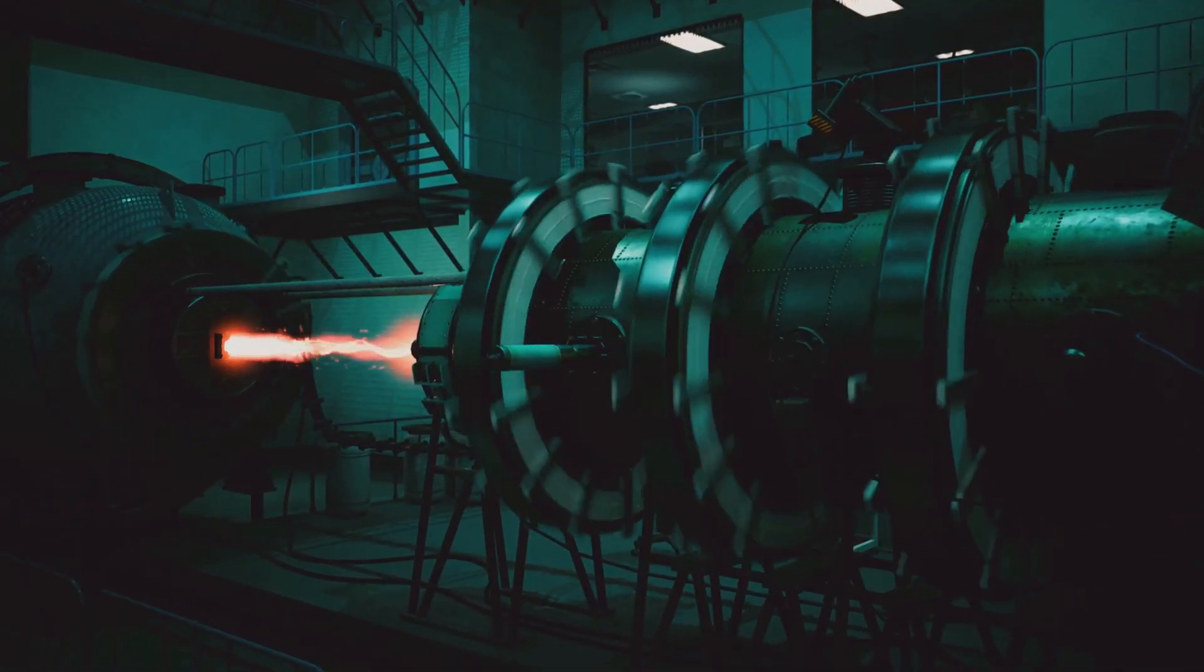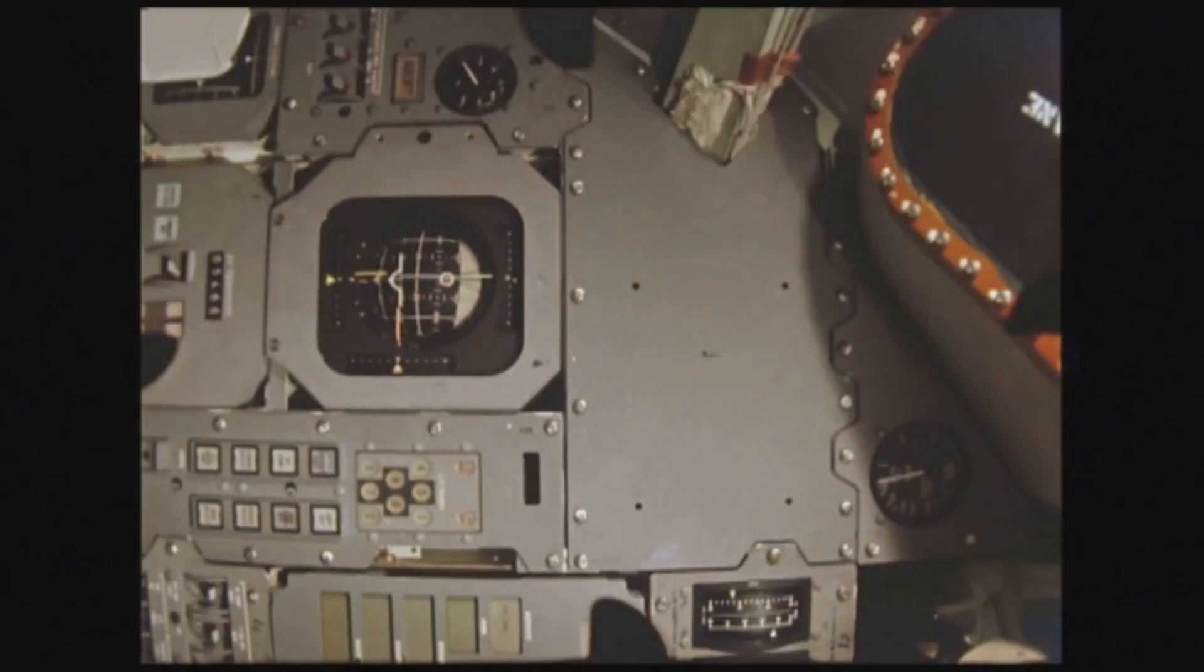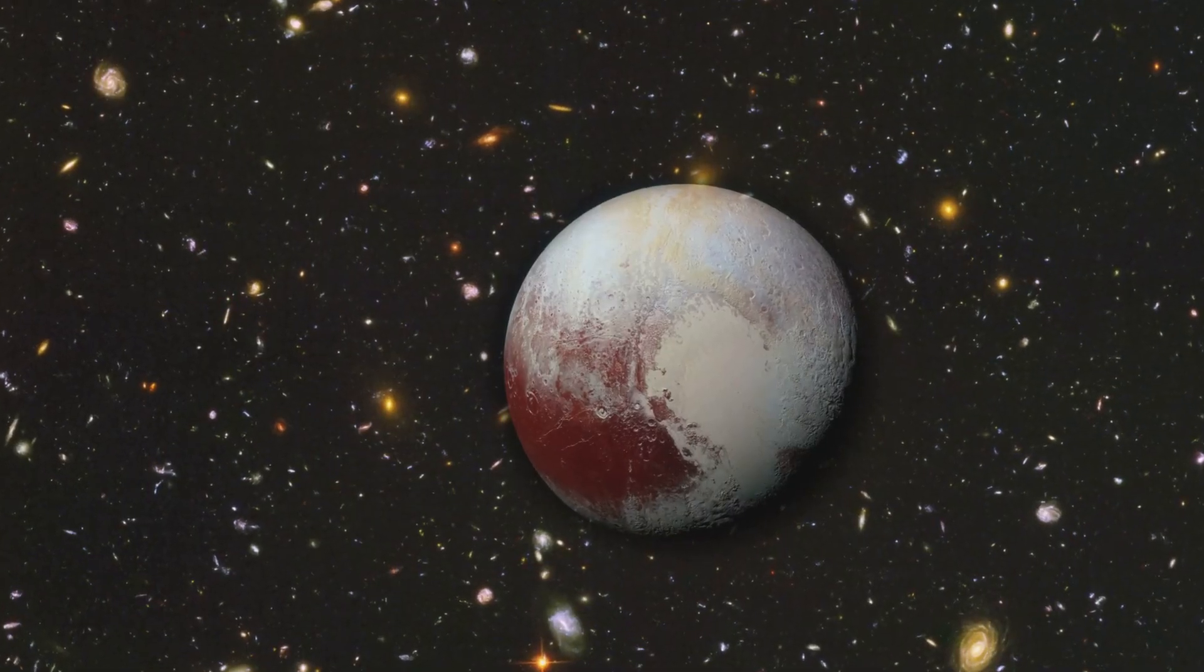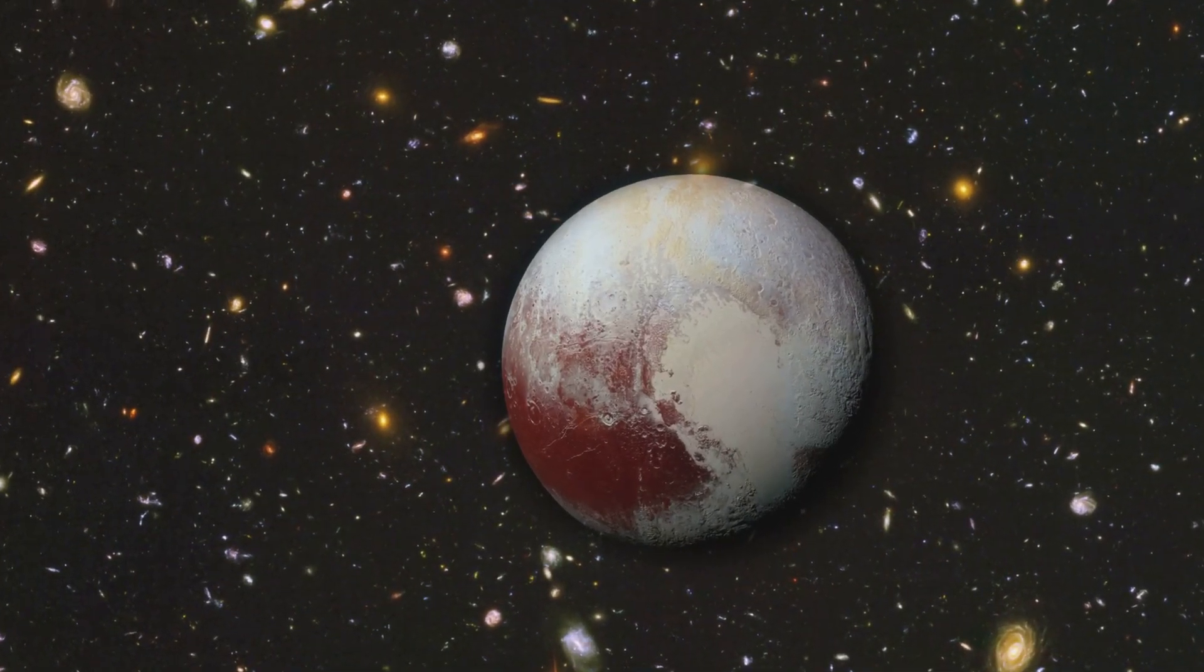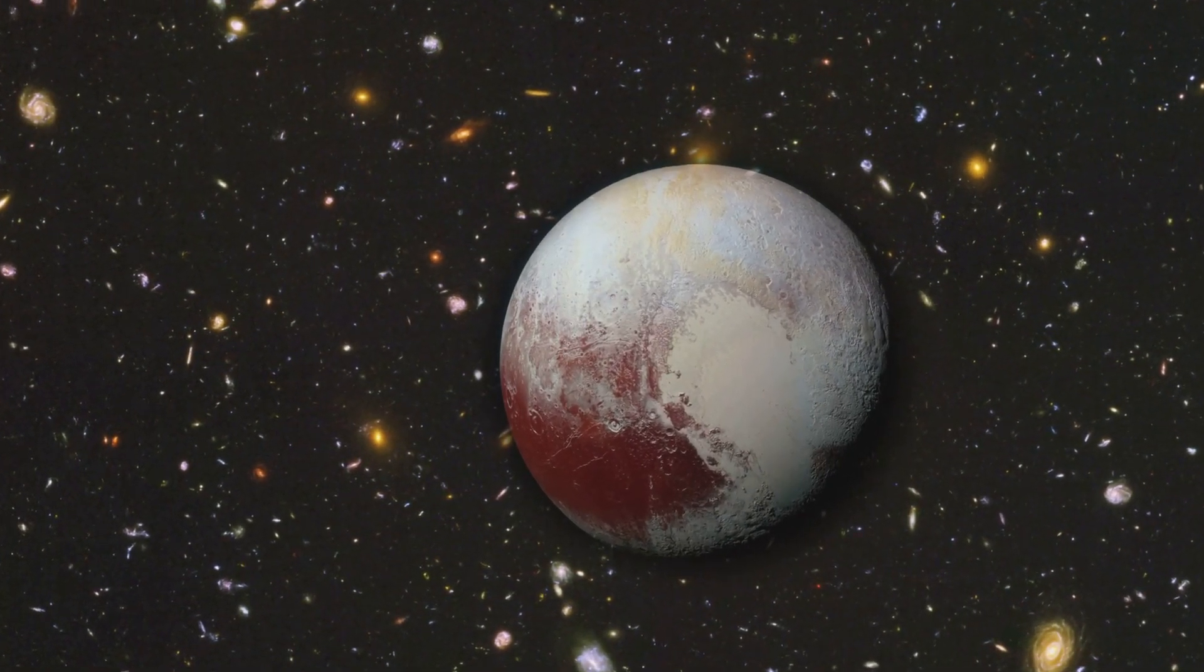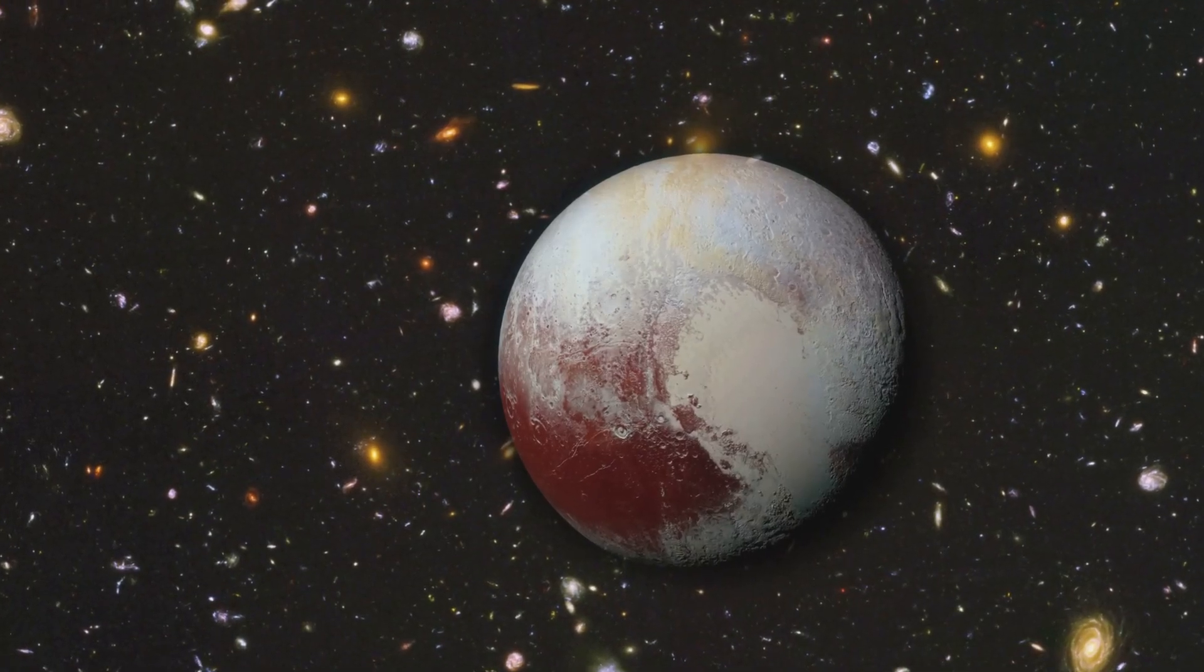This temperature gradient generates a steady flow of electricity to power the spacecraft's computers, scientific instruments, and communication systems. Thanks to these plutonium-powered RTGs, we have been able to explore the outer solar system in ways that would otherwise be impossible.